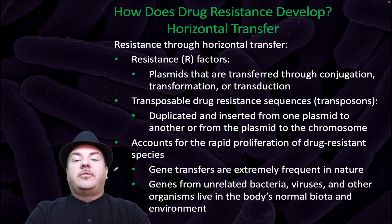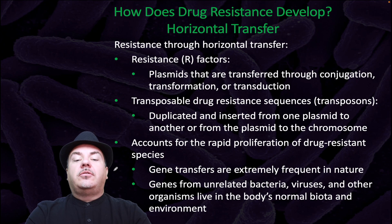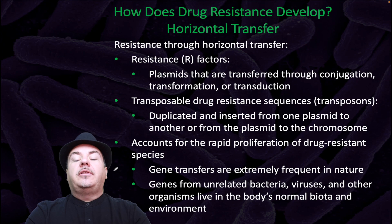Another way drug resistance develops is through horizontal gene transfer. Resistance or R factors are plasmids that are transferred through conjugation, transformation, or transduction. Transposable drug resistance sequences, or transposons, are duplicated and inserted from one plasmid to another or from the plasmid to the chromosome. This accounts for the rapid proliferation of drug resistant species. Gene transfers are extremely frequent in nature, and genes from unrelated bacteria, viruses, and other organisms live in the body's normal biota and environment.